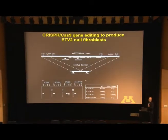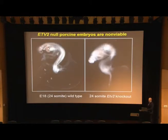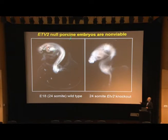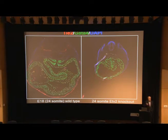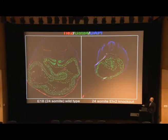ETV2 is a relatively small gene and can be completely deleted using CRISPR-Cas9. In the wild type control, there's clear evidence in this whole mount image of blood formation, whereas ETV2 knockouts are relatively pale and non-viable by E18. In the pig, gestational age is about 114 days; in the cloned animals it's about 126 days. ETV2 null pig embryos show growth retardation, and immunohistochemistry confirms vasculature and blood components are completely absent in the mutant.